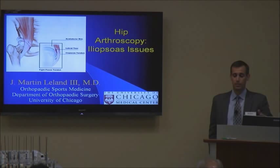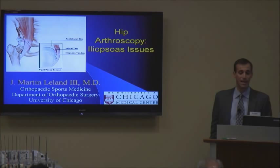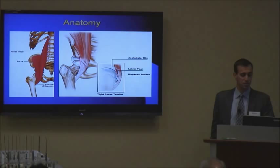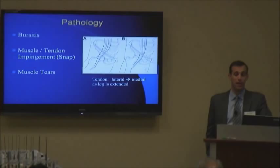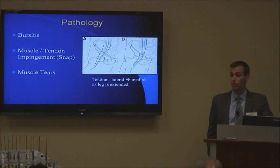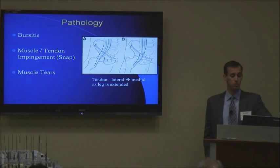In addition to femoroacetabular impingement, you can get some labral issues as a result of that, in addition to other symptoms patients can get. The iliopsoas is obviously a combination tendon where the psoas and the iliacus meet together, coming right over the anterior aspect of the hip and inserting on the lesser trochanter. The pathology can take a few different forms: bursitis in the area, muscle-tendinous impingement or snapping, and muscle tears.